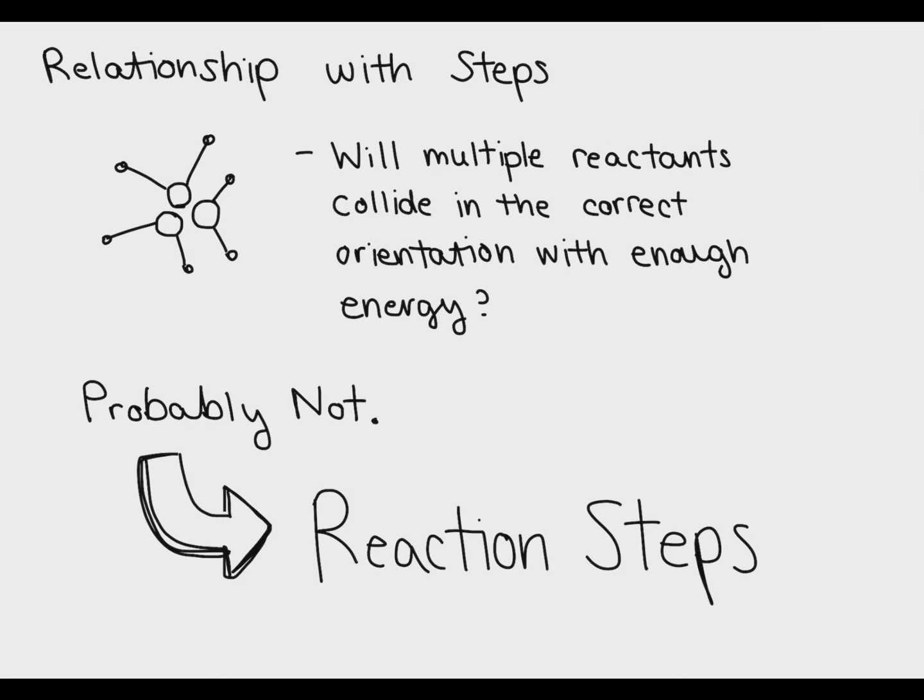The final concept I want to introduce is where reaction steps come from. So here I've drawn three molecules colliding in the exact right way to create a reaction. This is possible but not very likely. Now imagine that I have a reaction that requires four or five or even six different molecules to collide. The probability that six molecules have enough energy and the correct orientation to properly react is not very high.